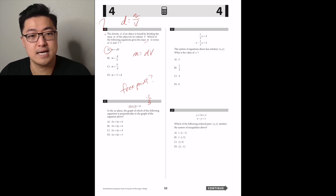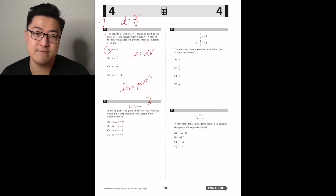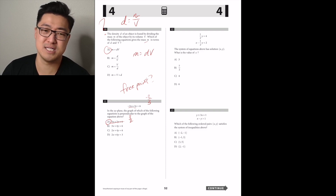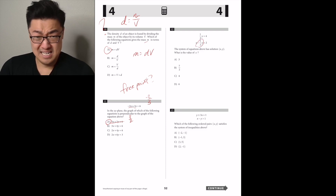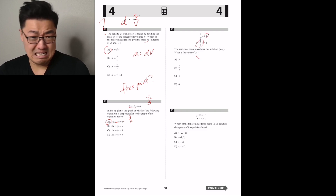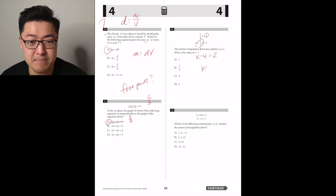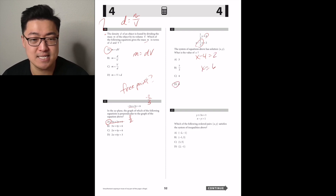The system of equations above has solution (x, y). What's the value of x? We just replace one-half y with 4, so x minus 4 equals 2, and x equals 6. Answer D.